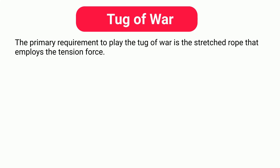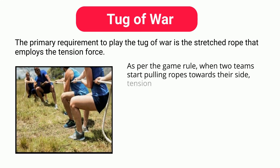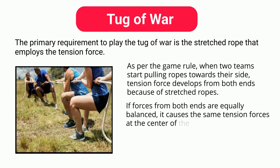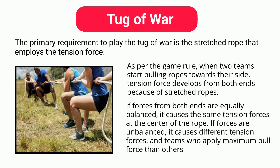Tug of War. The primary requirement to play tug of war is a stretched rope that employs tension force. As per the game rules, when two teams start pulling the rope towards their side, tension force develops from both ends due to the stretched rope. If forces from both ends are equally balanced, it causes the same tension force at the center of the rope. If forces are unbalanced, it causes different tension forces, and the team that applies the maximum pull force ultimately wins the game.